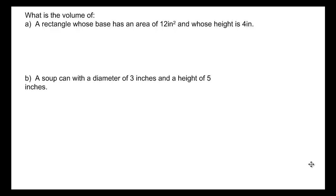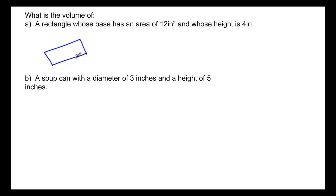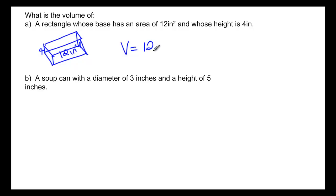A rectangle whose base has an area of 12 inches squared and whose height is 4 inches — here's a base with an area of 12 inches squared and a height of 4 inches. To find its volume we multiply the area of the base times the height and get 48 inches cubed.